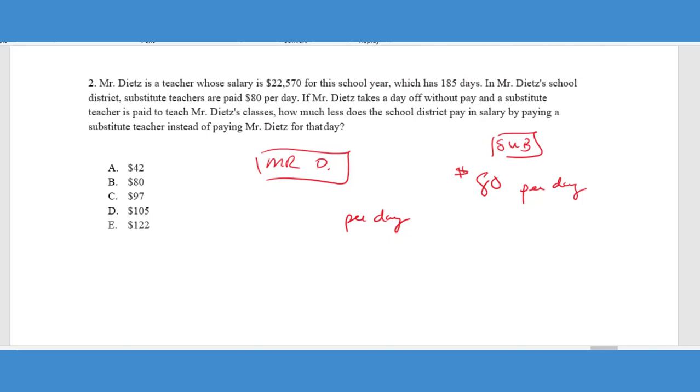Now, for us to get Mr. Dietz's per day salary, we need to take his annual salary, which is $22,570 and divide it by the number of days that he's going to work, which is 185 school days. And so if we do that, what that's going to give us is $122 per day.